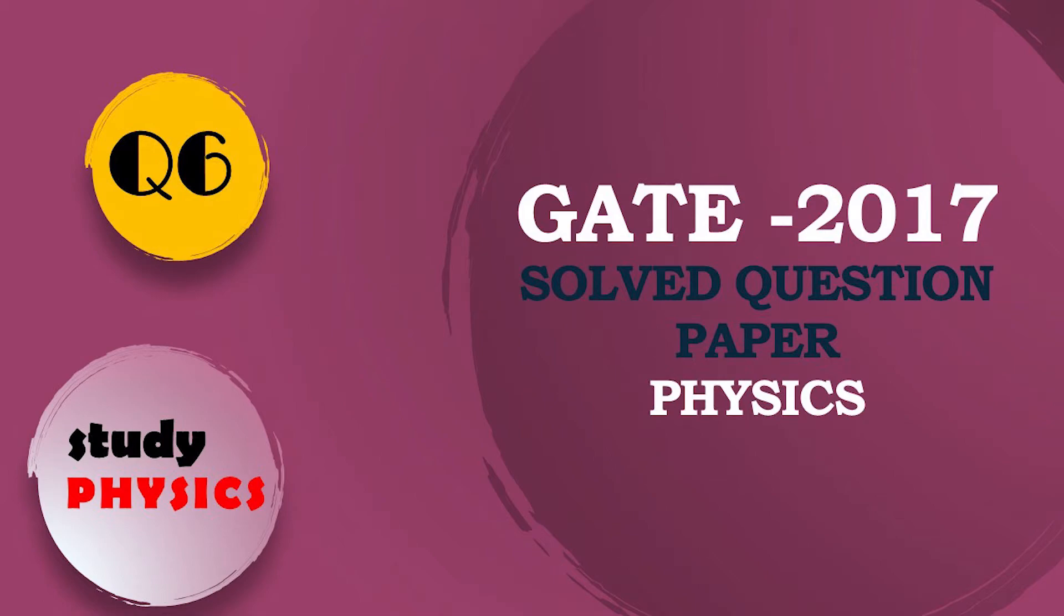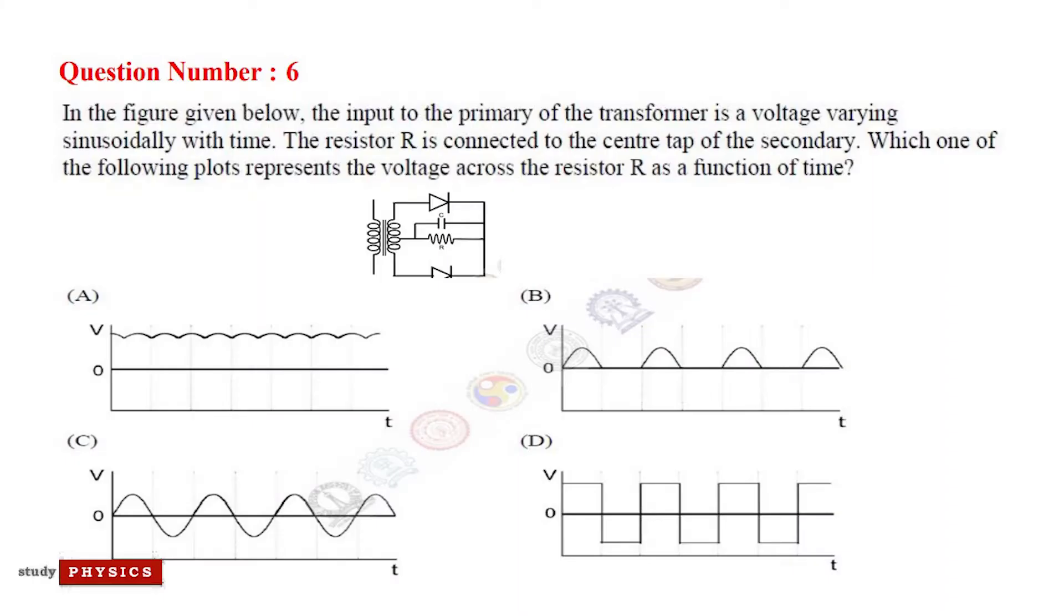Hi everyone, welcome to Study Physics. This is question number 6. In the figure given below, the input to the primary of the transformer is a voltage varying sinusoidally with time. The resistor R is connected to the center tap of the secondary. Which one of the following plots represents the voltage across the resistor R as a function of time?